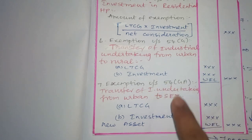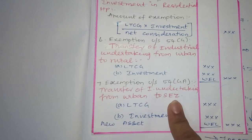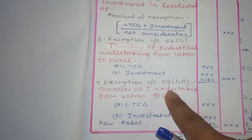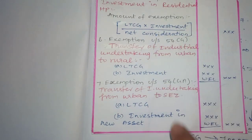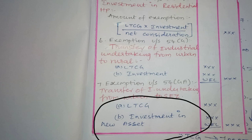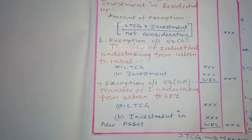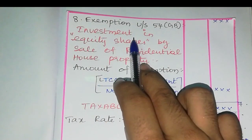Next, the exemption under Section 54G is for transfer of assets from urban areas to rural areas. Section 54GA covers transfer from urban areas to Special Economic Zones. When we calculate the amount of exemption, it is: Long Term Capital Gain or Actual Investment in the New Asset, whichever is least, is exempt.